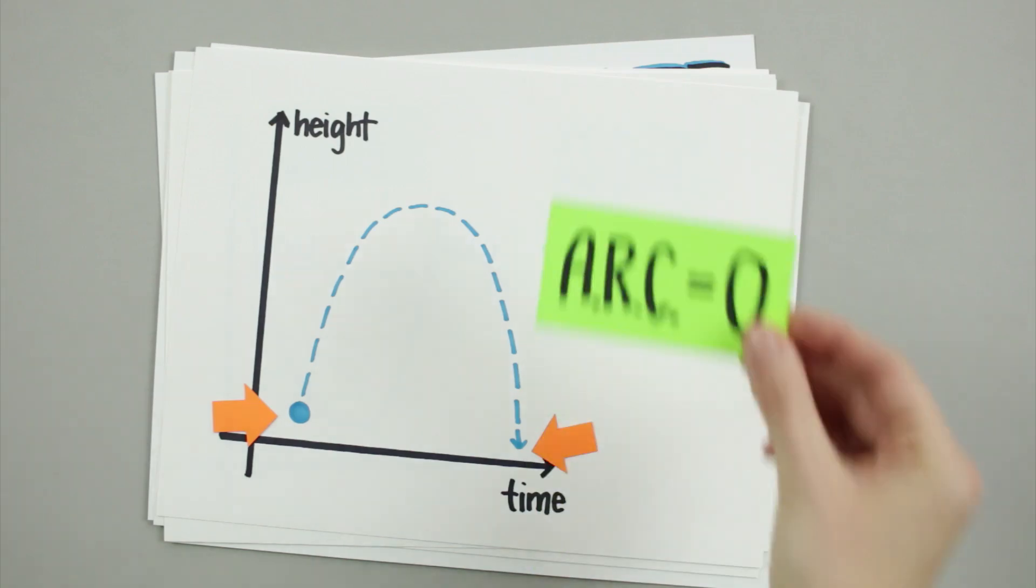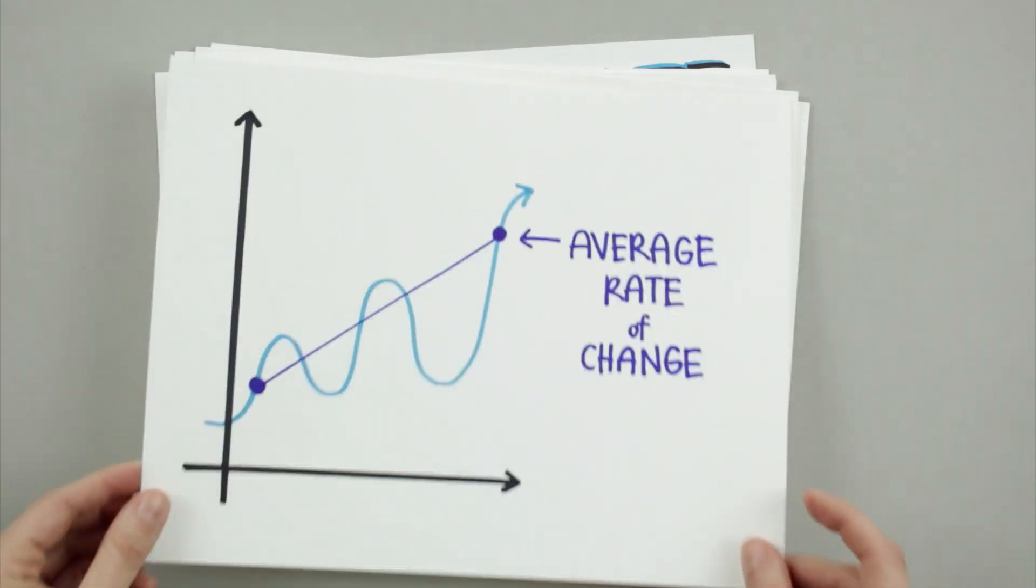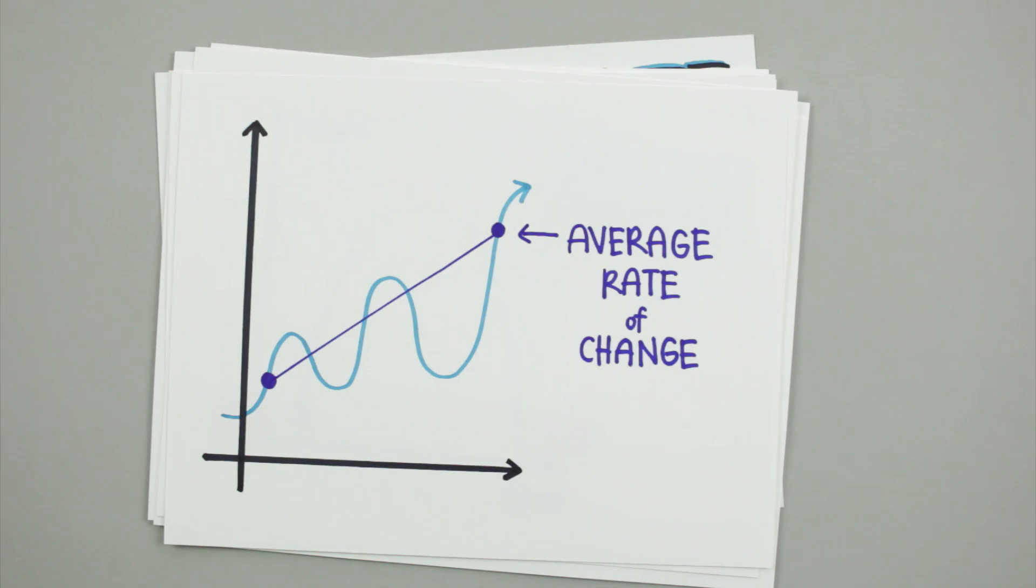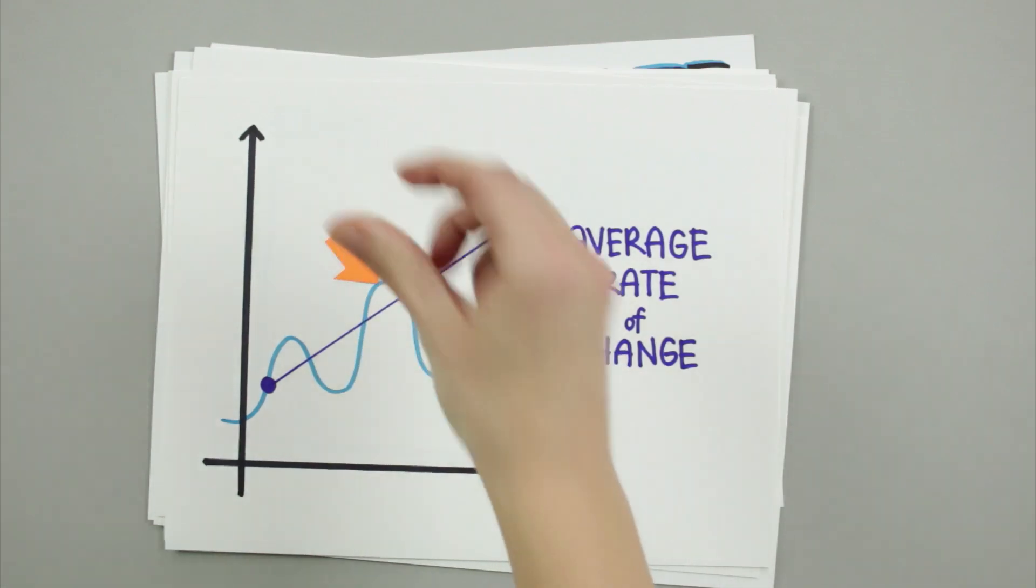So clearly, finding the average rate of change is not the same thing as knowing the rate of change at any particular moment. Rate of change is represented on a graph as the slope of a curve, and looking at this function and the secant line found using the average rate of change formula, it's clear that the average rate of change doesn't tell us anything at all about the actual rate of change at this point or the slope of the curve at this point.